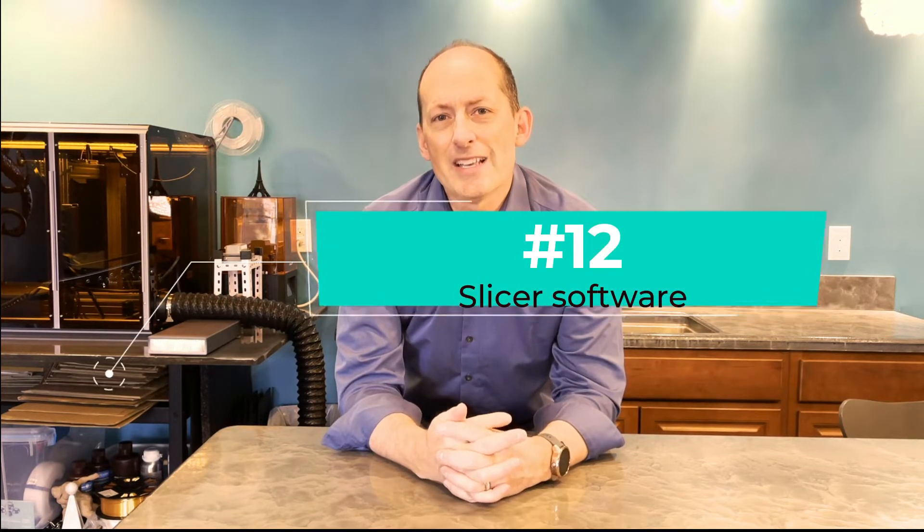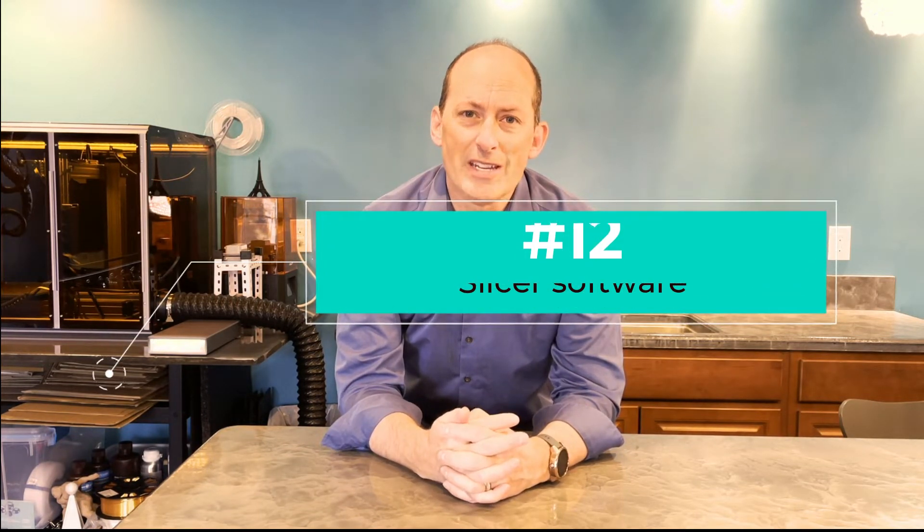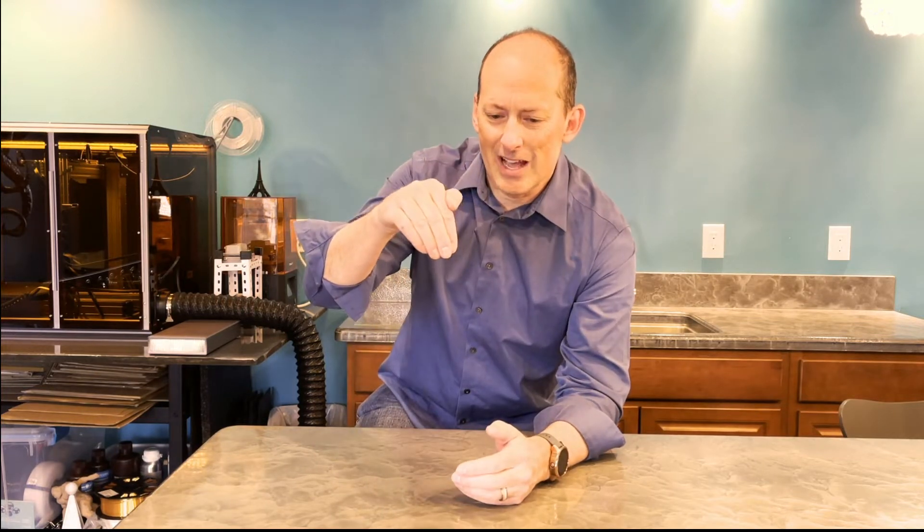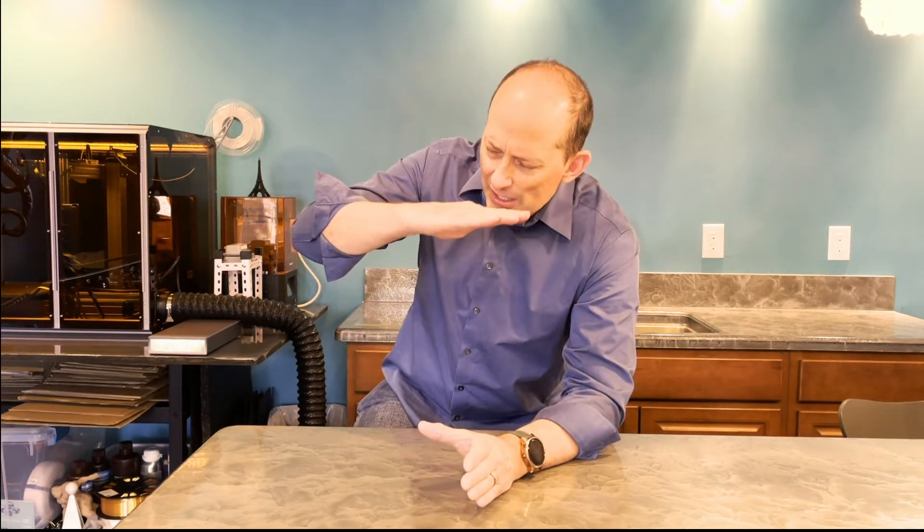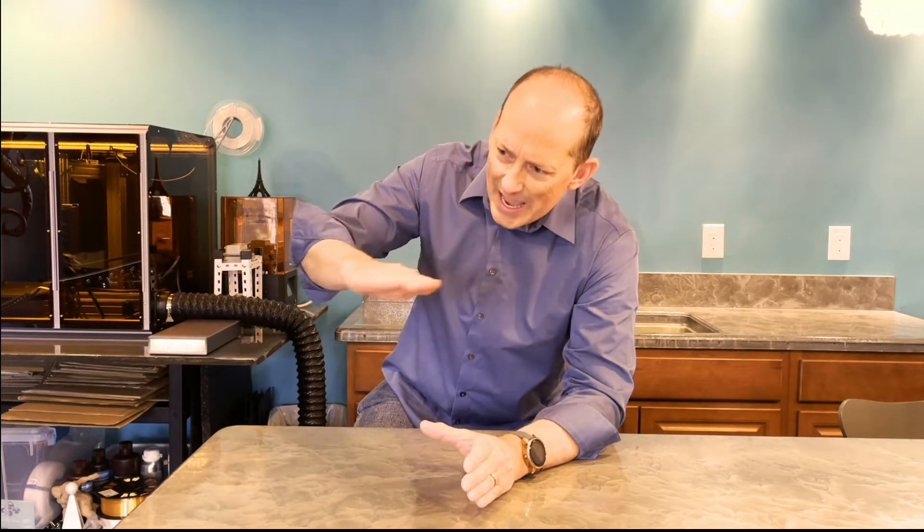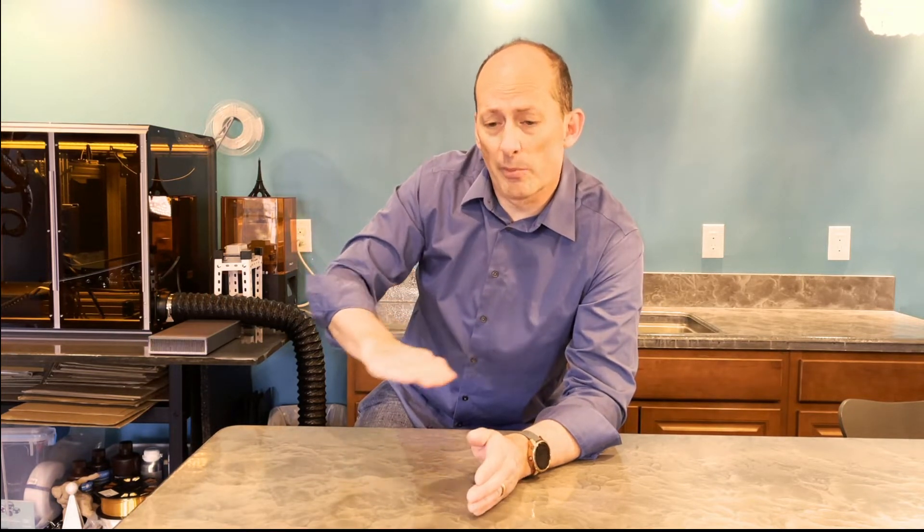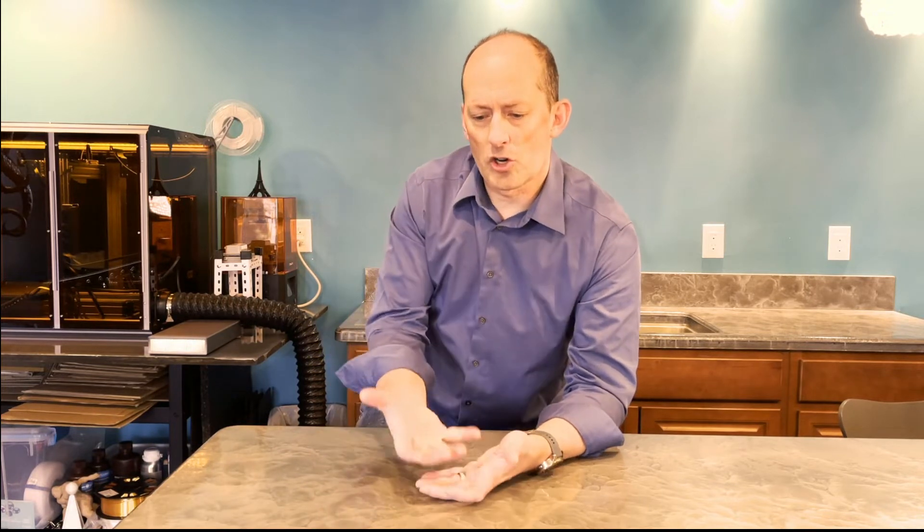A slicer is a software that is used to tell your printer how to take that STL and produce it in G-code. We're creating the G-code and a slicer takes your model and literally goes through and slices every single layer that is necessary to produce this. It says, what does my printer have to do in order to create this level by level all the way up until we're complete.